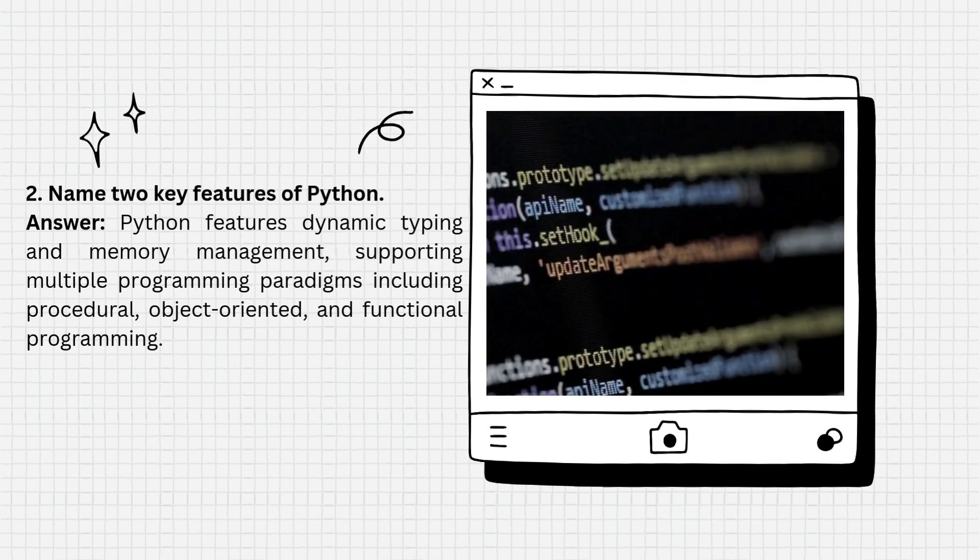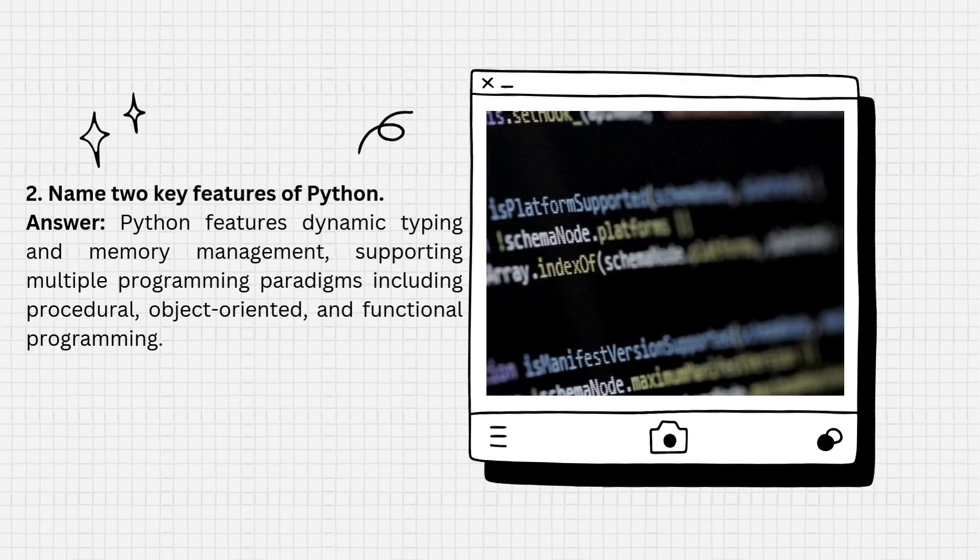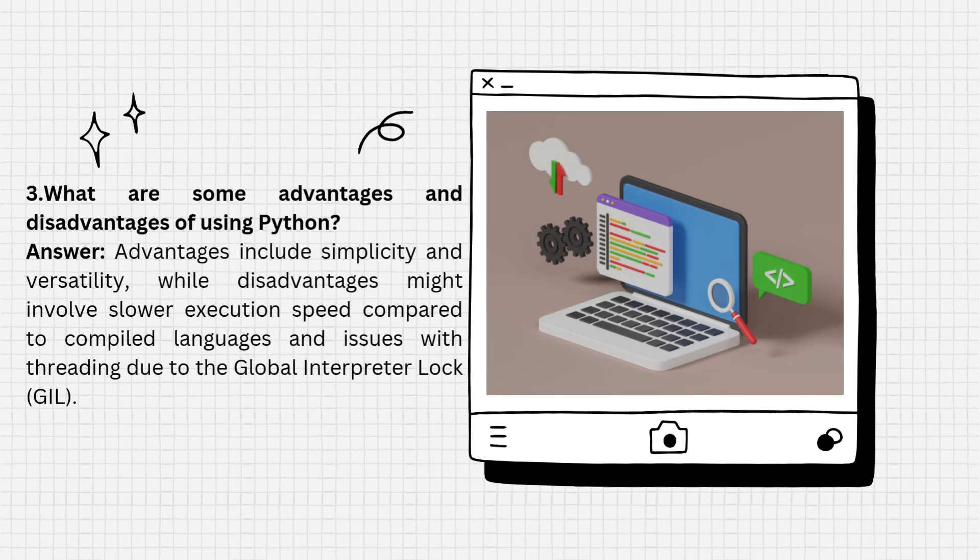These include procedural, object-oriented, and functional programming. Question 3: What are some advantages and disadvantages of using Python? Answer: Advantages include simplicity and versatility, while disadvantages might involve slower execution speed compared to compiled languages and issues with threading due to